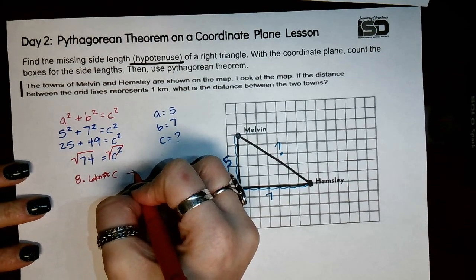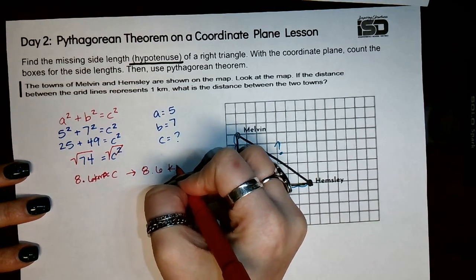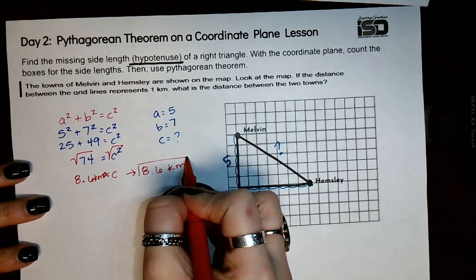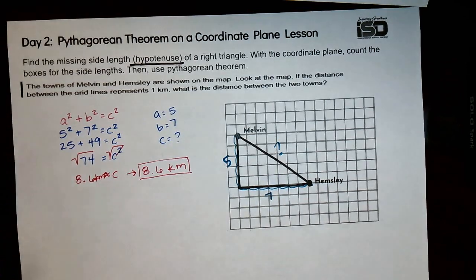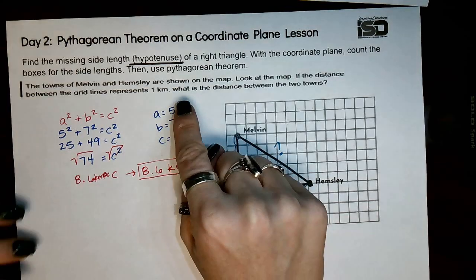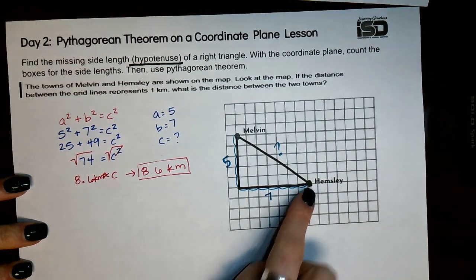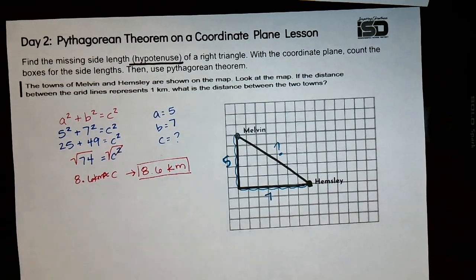So I'm going to write that over here just so it looks a little bit more neat. So 8.6 kilometers, that is going to be your missing value. So then if you were to actually answer this as a question, as a statement, you would say that the distance between Melvin and Hemsley is approximately 8.6 kilometers.